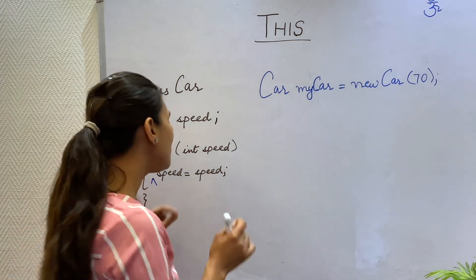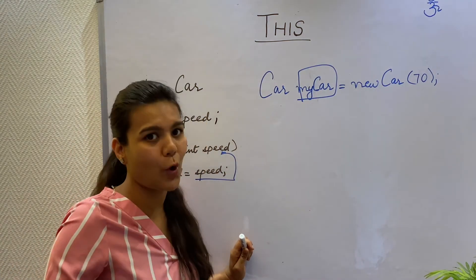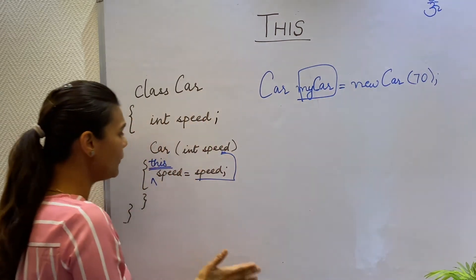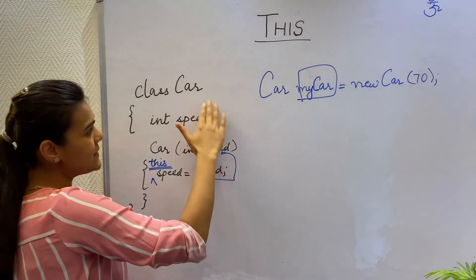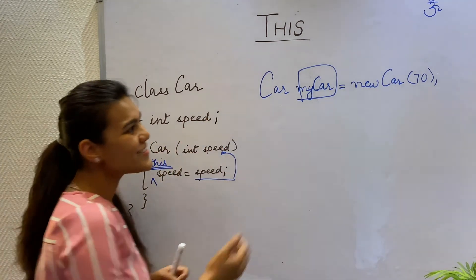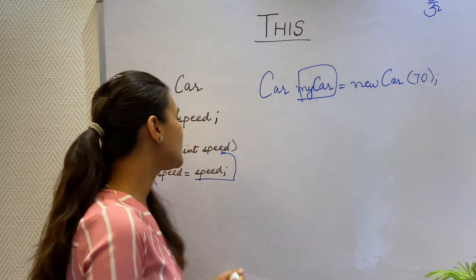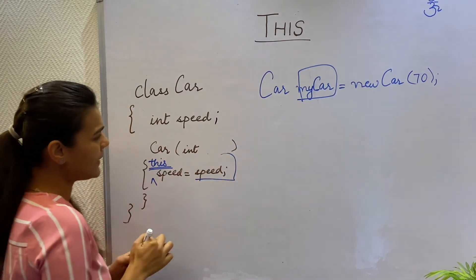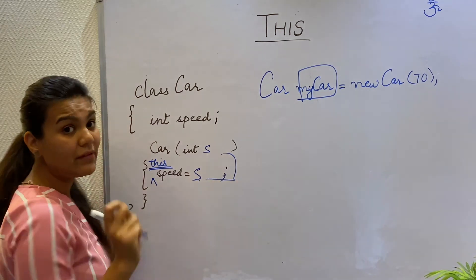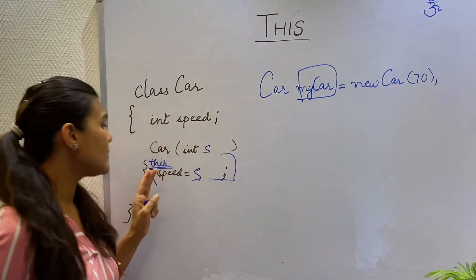The compiler will replace the this keyword with the myCar object, because this refers to the current object. So this gets replaced with the myCar object, and then we know that myCar.speed is talking about the instance variable, whereas speed is the parameter of the constructor. So when I pass 70, I get the right output. Even in cases where the parameter has a different name like s, the this keyword still gets added by the compiler before the instance variable.